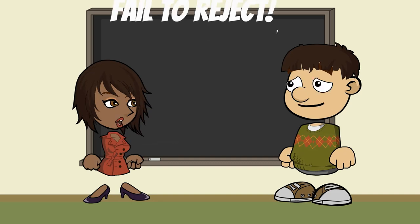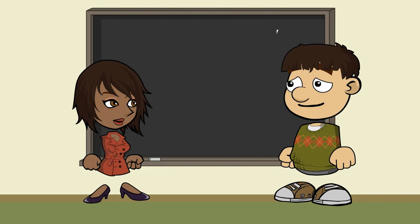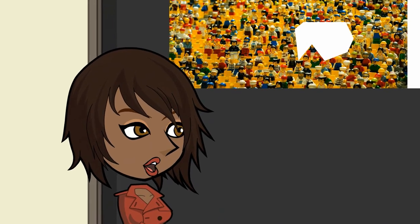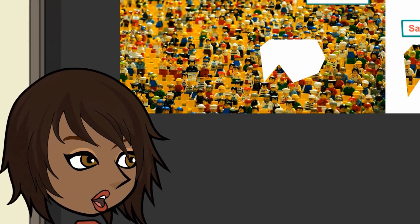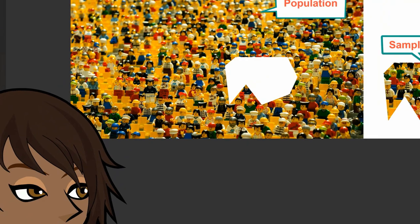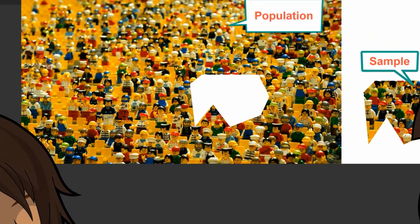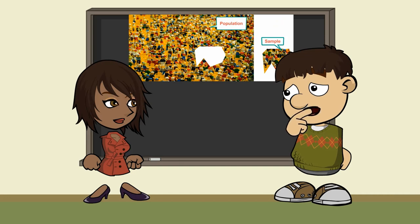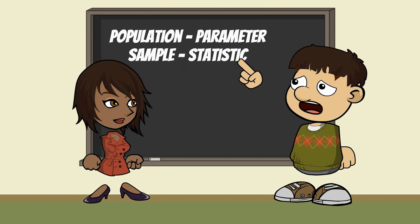Remember, this is about a test of a hypothesis about a characteristic of a population we are interested in. Because we don't have all the data about the population, we must make do with sample data. From that, we make inferences about the population characteristic. We calculate a test statistic from the sample data and compare that with the value for the population parameter we assume to be true. And I even remembered the rule that population is to parameter as sample is to statistic.